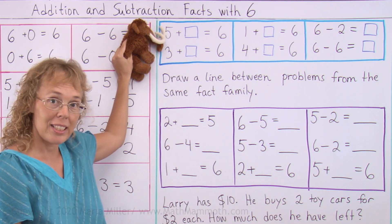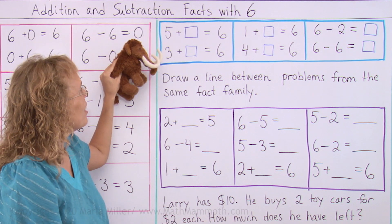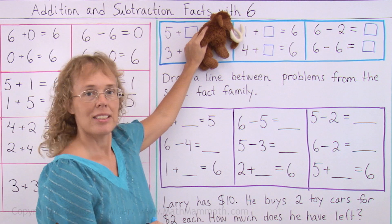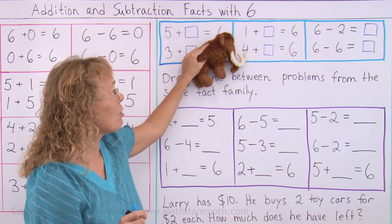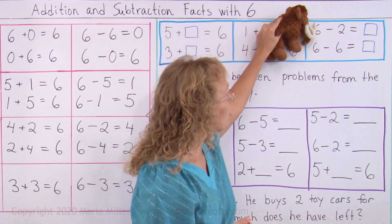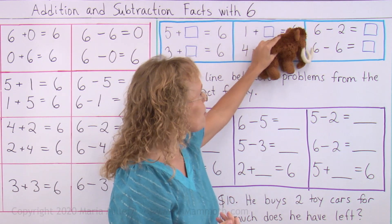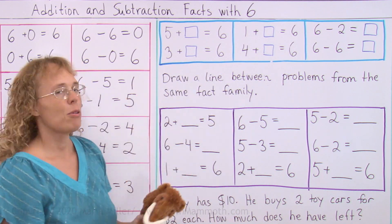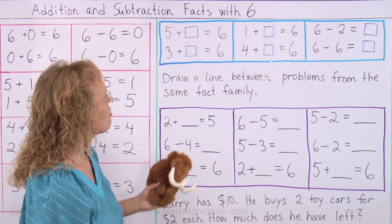Five plus what number makes six? One. Three plus what makes six? Three. One plus what makes six? Five. And then four plus what makes six? Two. Six minus two? Four. Six minus six? Zero. A little bit more, okay? I won't read the problems now. Mathie will just point to them.